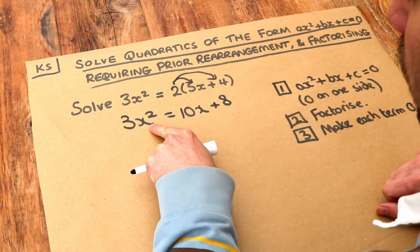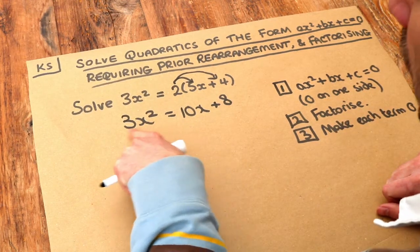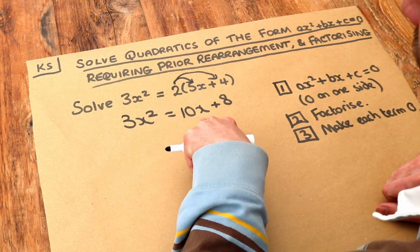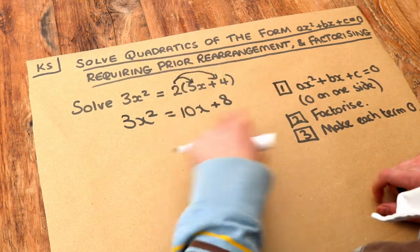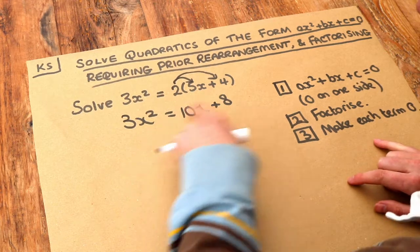Now, you should get everything on the side where the X squared term is positive. So we want to leave the 3X squared here. If we were to move it to the other side, it would become minus 3X squared, which would be negative. So we'll keep that there and we'll move these terms over here.